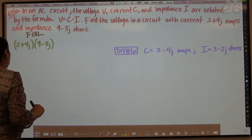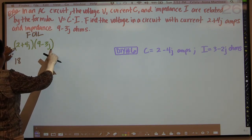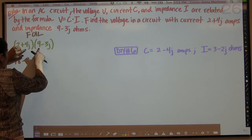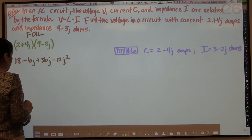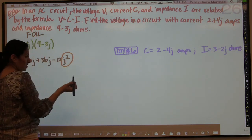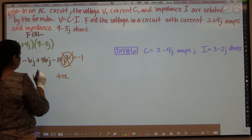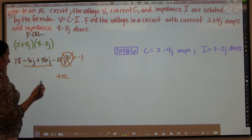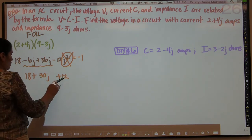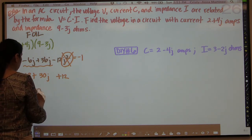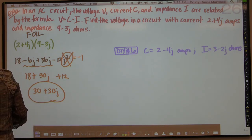Multiplication requires us to FOIL. First times first: 2 times 9 is 18. Outside times outside: 2 times negative 3j is negative 6j. Inside times inside: 9 times 4j is 36j. Last times last: negative 12j squared. Now j squared is the same thing as negative 1, so negative 12 times negative 1 is positive 12. We have like terms: 36j and negative 6j gives 30j. Combining the real parts: 18 plus 12 is 30. So the voltage is 30 plus 30j volts.